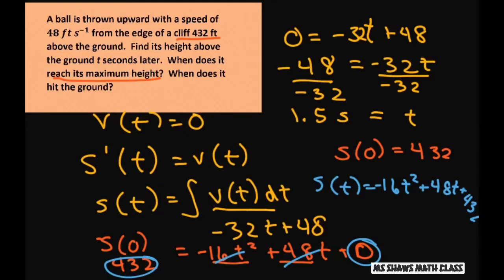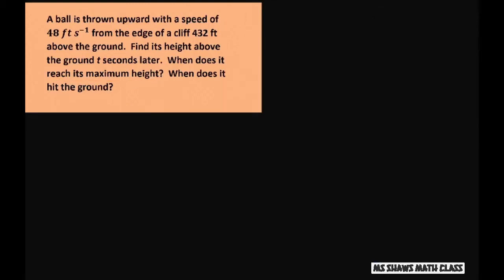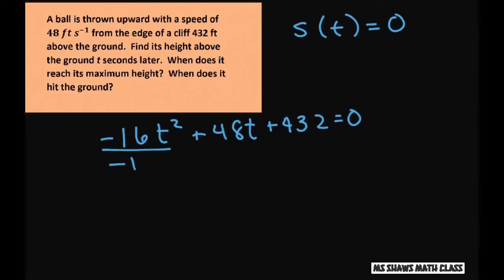Now the expression s(t) is valid until the ball hits the ground. This happens when s(t) equals 0. So now we have negative 16t squared plus 48t plus 432 equals 0. Now we can divide everything by negative 16. So just divide everything by negative 16, make this a little easier. And you're going to get t squared minus 3t minus 27 equals 0.